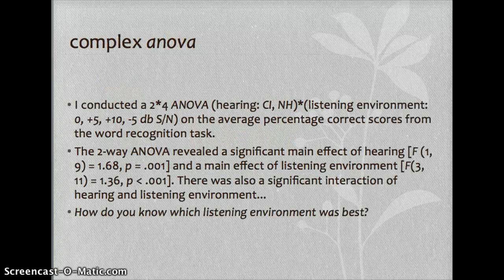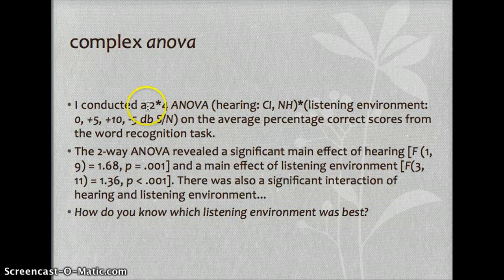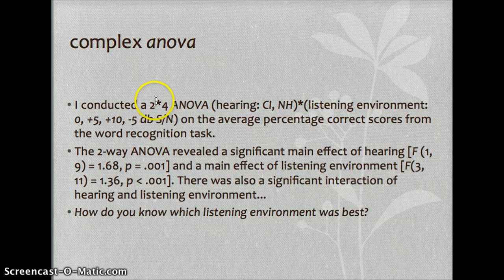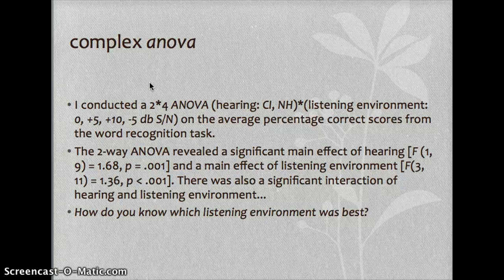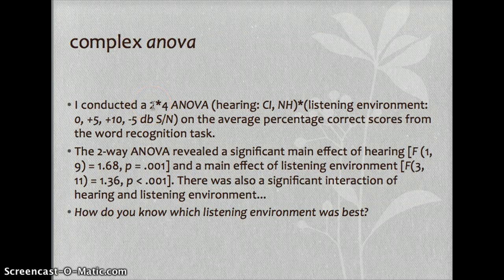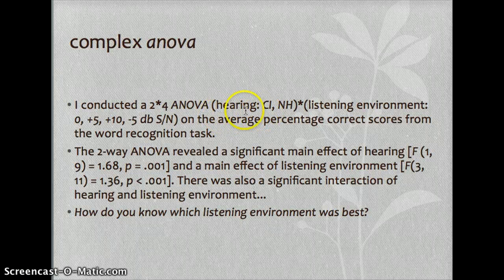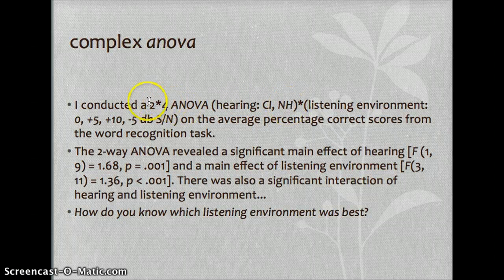A complex ANOVA — if you see something written like a 2 by 4 ANOVA, or a 3 by 2, the numbers tell you how many independent variables there are. If you have a 2 by 4 by 2, that means there are three independent variables, and the number indicates the levels of that independent variable. In this example, a 2 by 4 ANOVA, the first independent variable is hearing, and there are two levels — cochlear implant and normal hearing. That's where we get the 2.